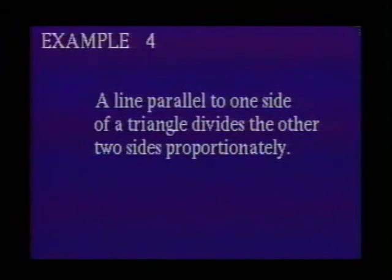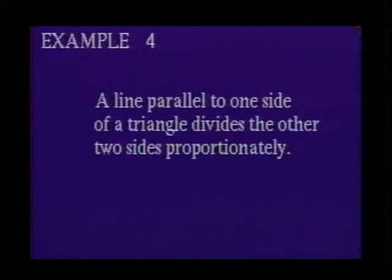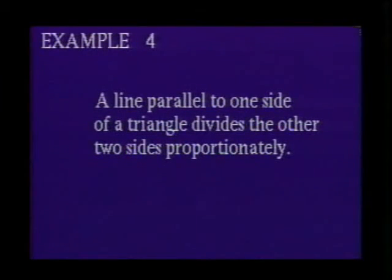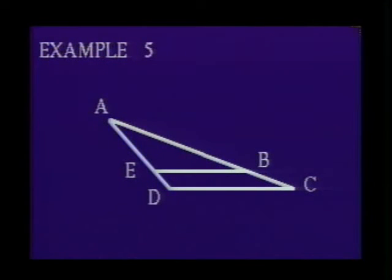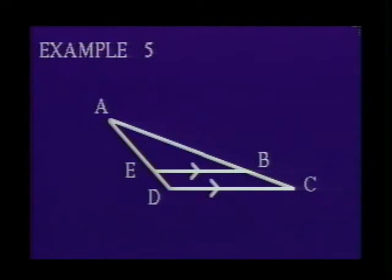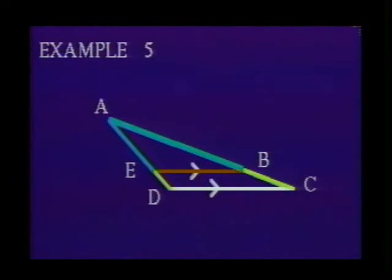Since we know that the corresponding sides of similar triangles are proportional, we can make this general statement: a line parallel to one side of a triangle divides the other two sides proportionately. Example 5: We will begin with triangle ACD. Line segment EB is parallel to line segment DC. Therefore, line segment EB will divide both line segment AD and line segment AC proportionately.